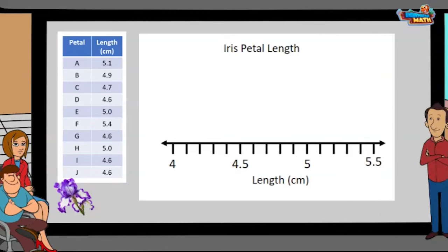Each tick mark in between the whole numbers will equal one tenth. This tick represents four and one tenth, this tick represents four and two tenths. This continues on until we reach five and five tenths.